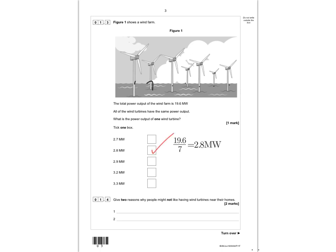Next question is 1.4: give two reasons why people might not like having wind turbines near their homes. The mark scheme is looking for any two of the following: they cause visual pollution, noise pollution, they can be dangerous to birds, or they may lower house prices. The first two are the most common reasons why people don't like wind turbines.